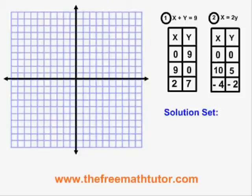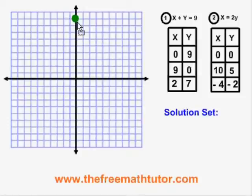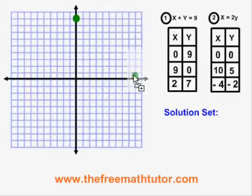The next step is to put the dots for the two lines onto the graph and then draw the lines. For equation 1, the point (0, 9) will be here. The point (9, 0) will be here. And the point (2, 7) will be here.